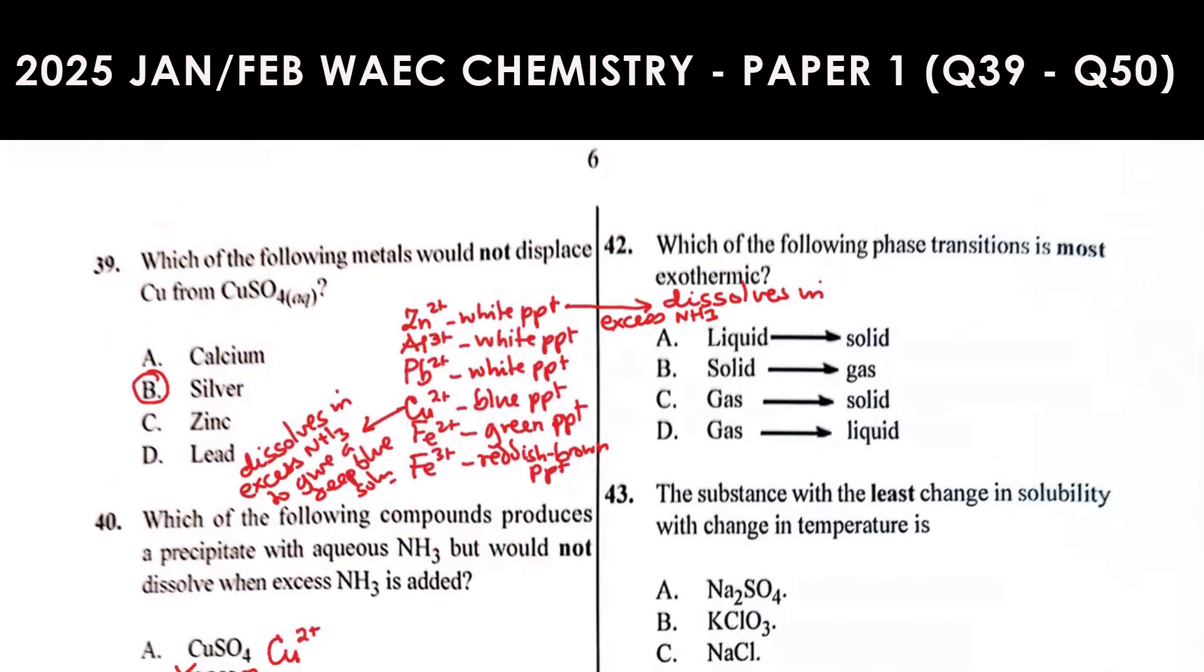Question 42: Which of the following phase transitions is most exothermic? Liquid converted to solid is freezing. Heat is released. Solid converted to gas is sublimation. Heat is gained here, so it's an endothermic process.